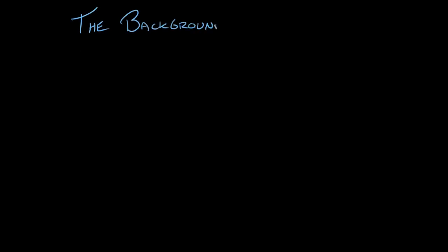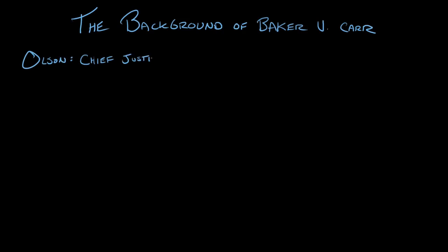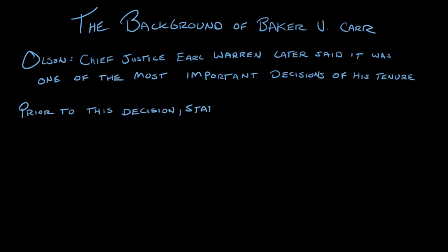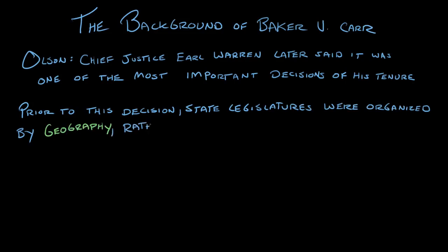Mr. Olson, could you kind of set the stage for us? What was the overall historical and political context that led up to the issues of Baker v. Carr? Well, it is a very, very important decision. Earl Warren, who was Chief Justice at the time the case was decided, later said that it was one of the most important decisions of his tenure as Chief Justice. Prior to the decision in Baker v. Carr and a couple of subsequent decisions, legislatures throughout the country were organized in a way based upon geography and other considerations rather than population.